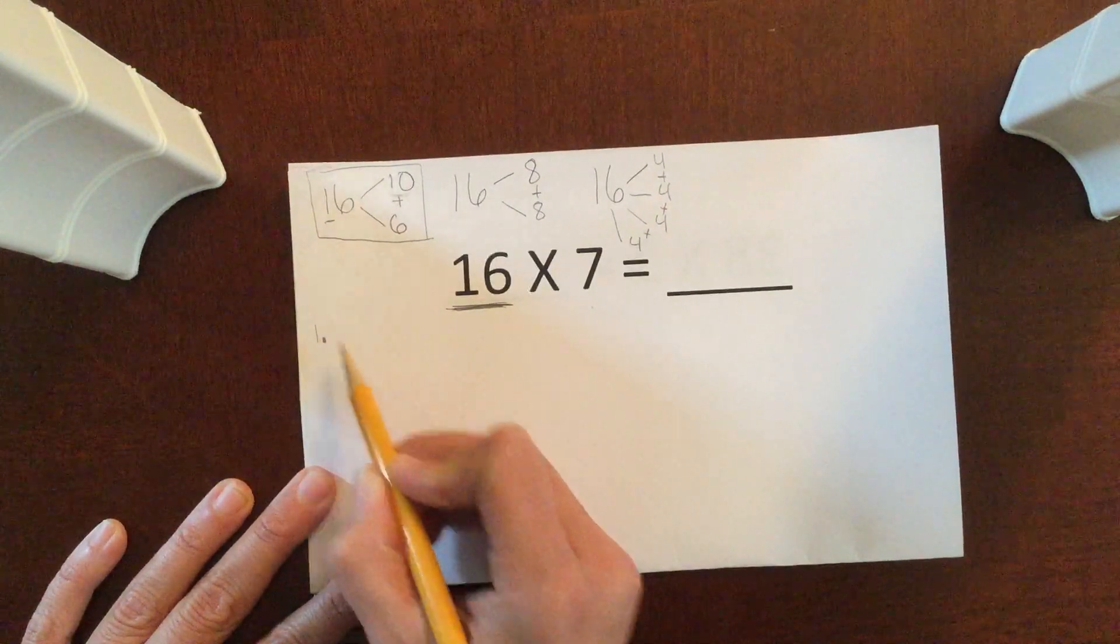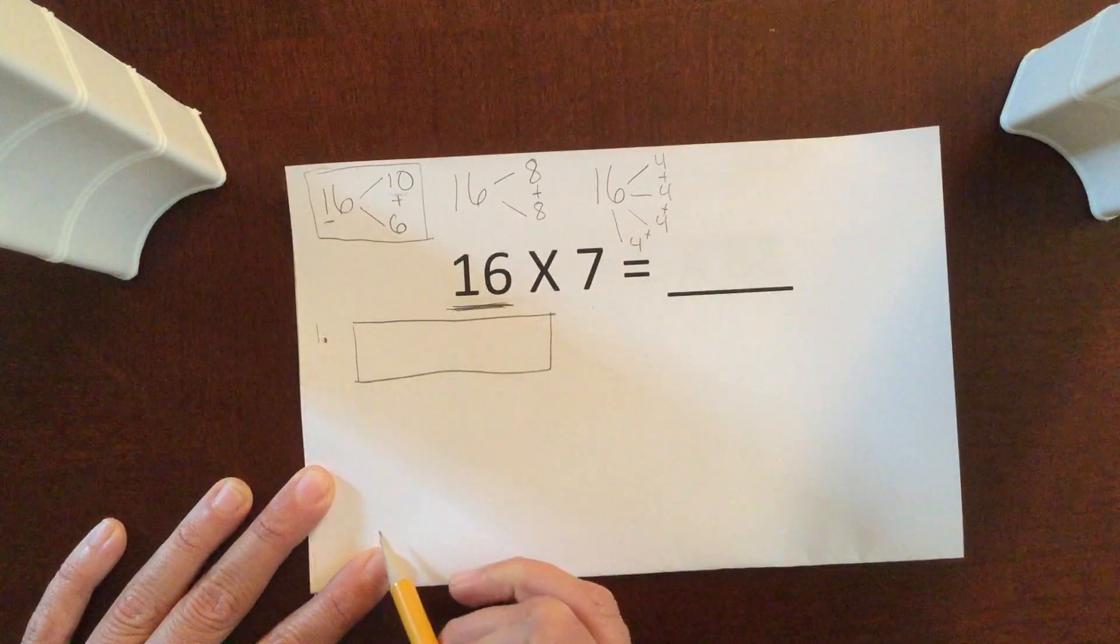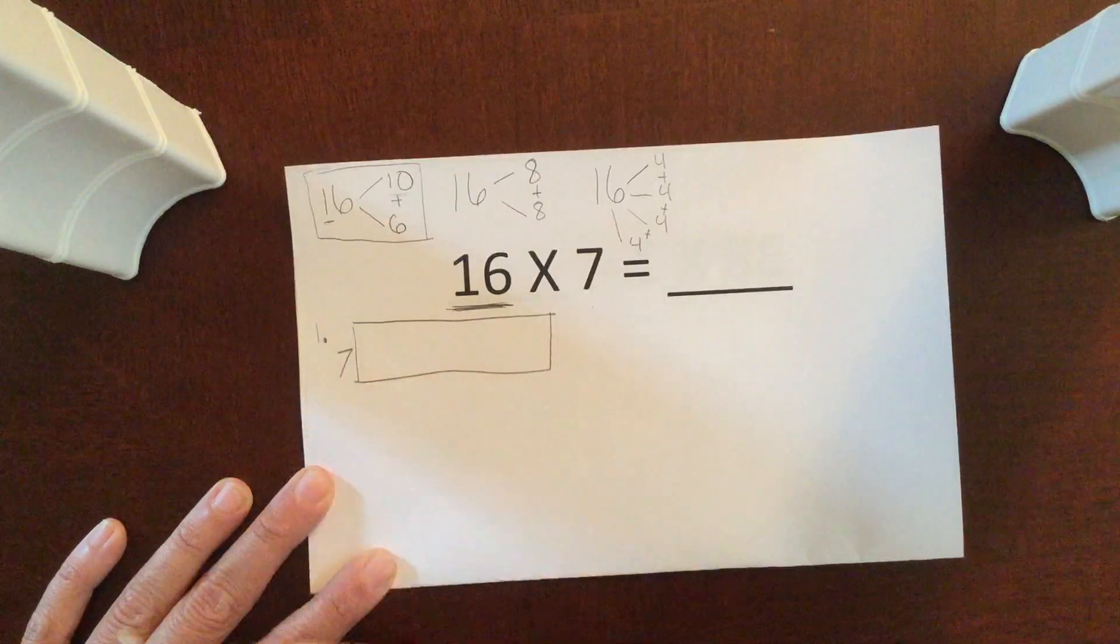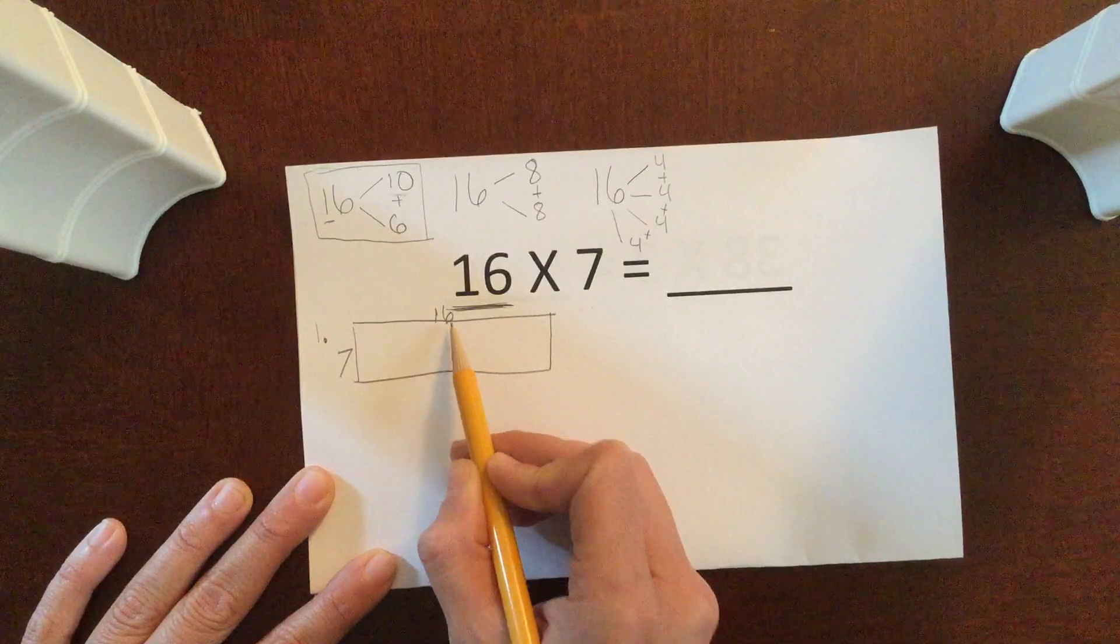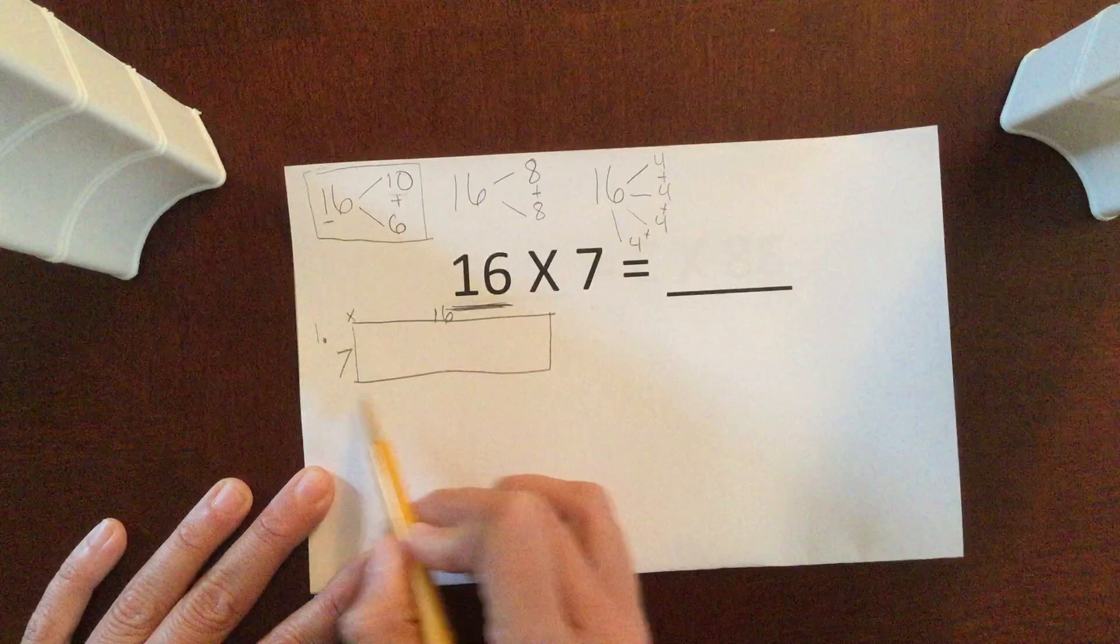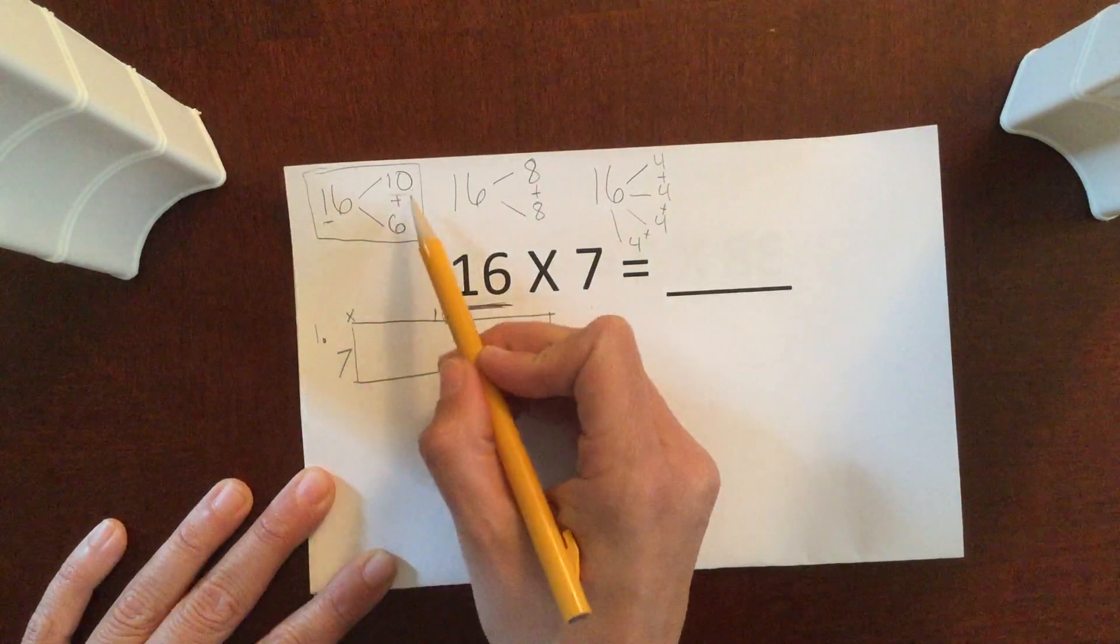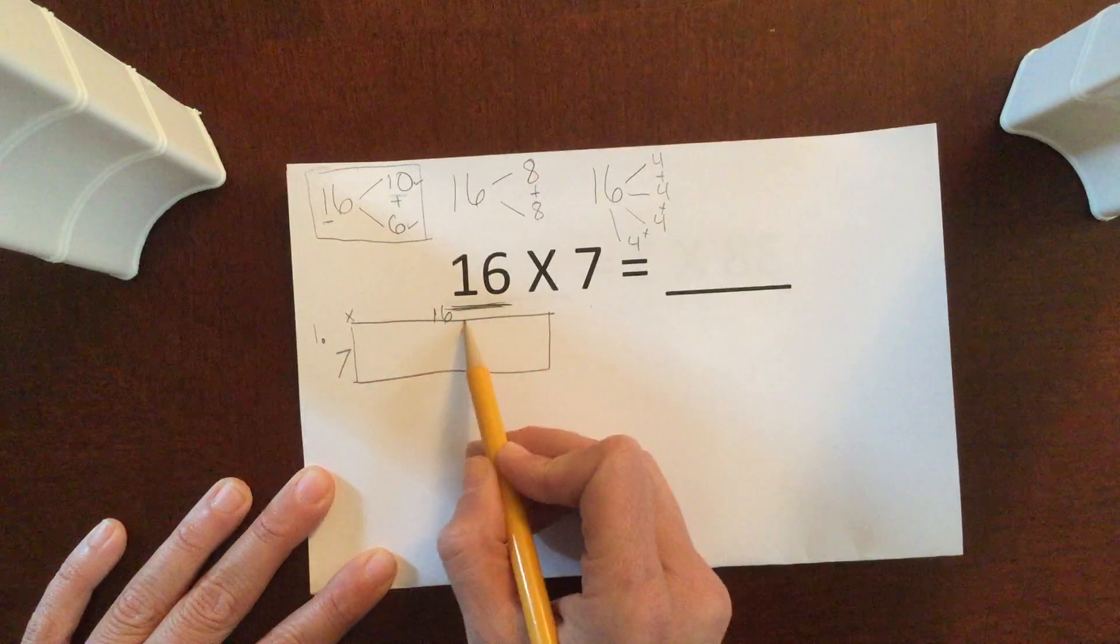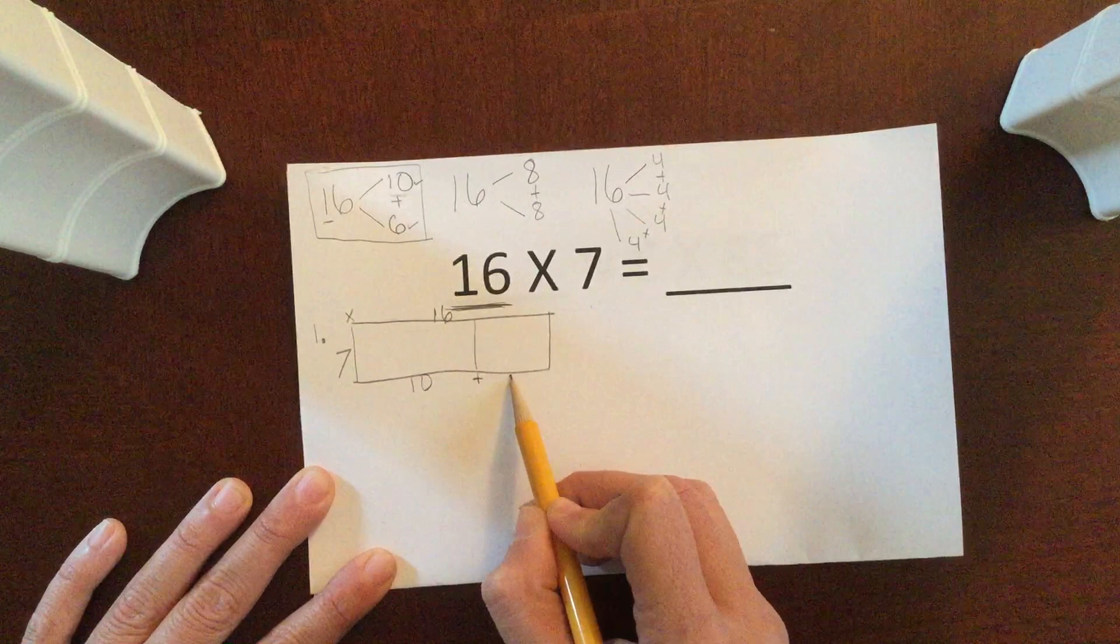So my step 1 is going to be creating a model. It's a rectangular model, and I'm going to fill in my numbers. So I'm going to be multiplying by 7, and this big piece right here is the 16. 16 times 7, or 7 times 16. But since I don't know this big fact, I need to break it into pieces that I do know. So my pieces that I do know are the 10 and the 6. So I'm going to break up my 16 into a piece of 10 plus a piece of 6.